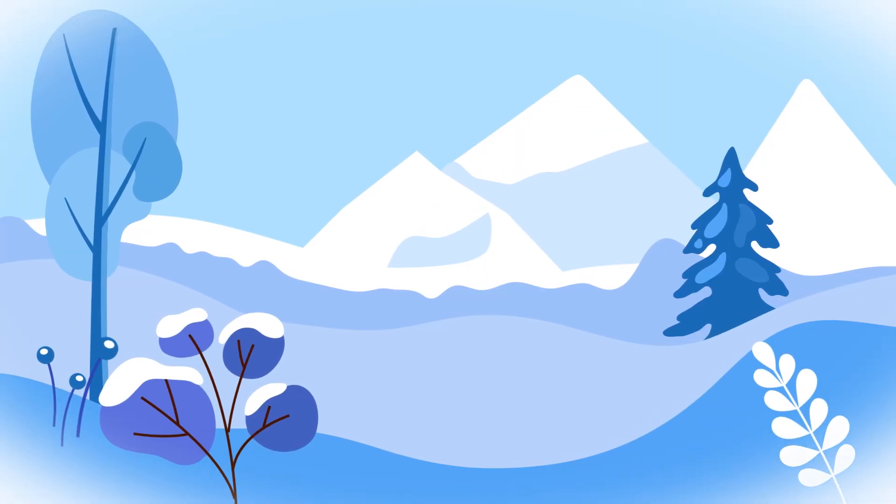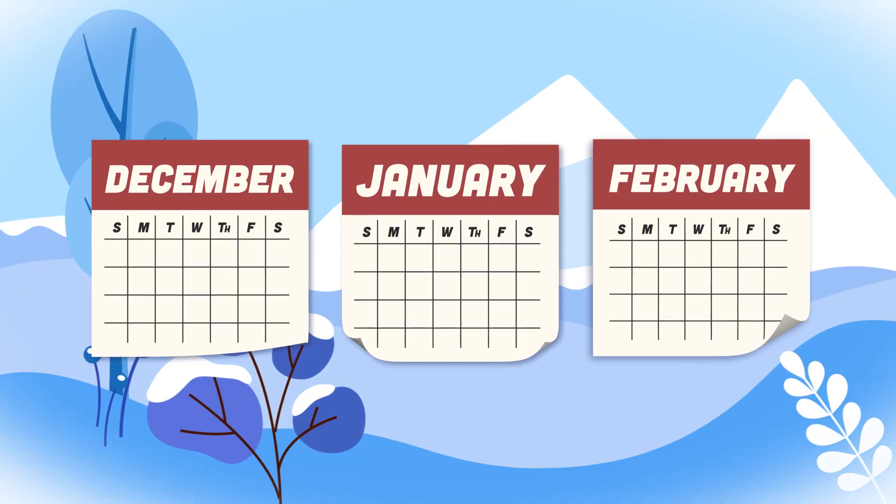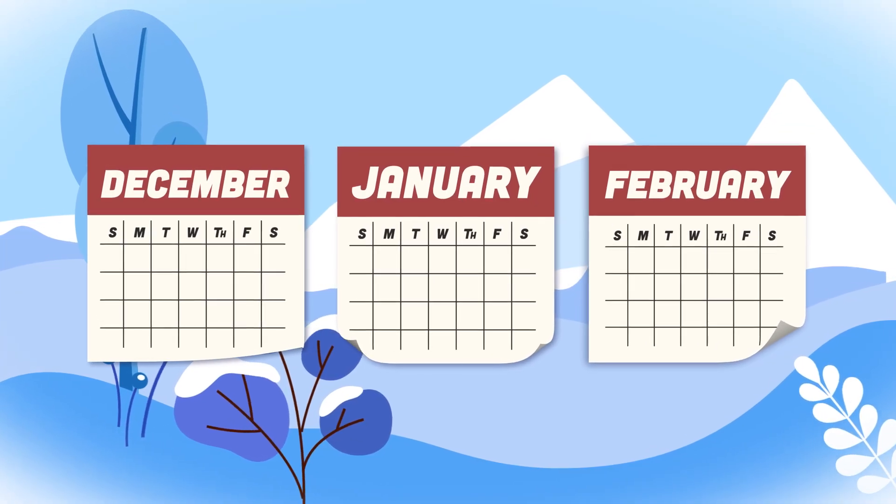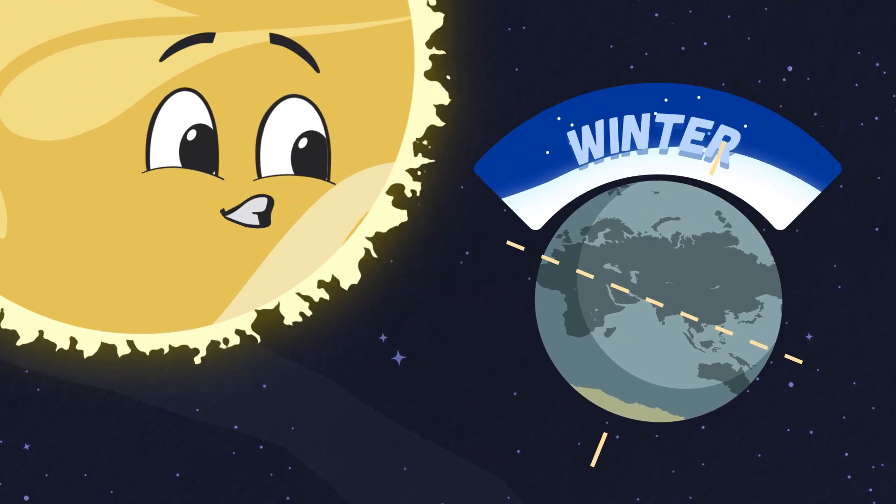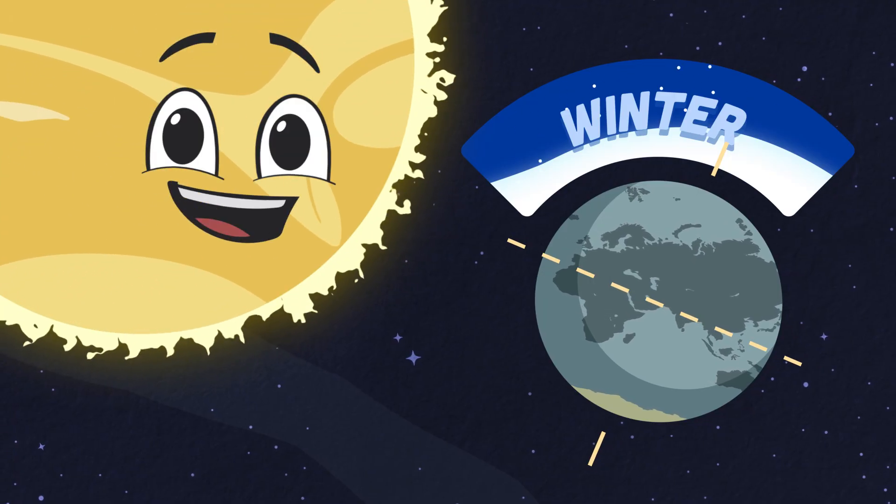Winter is the coldest season of the year. It lasts three calendar months. There's more I'd like to share. When the northern hemisphere is tilted away from the sun, winter occurs. Now isn't that so much fun?